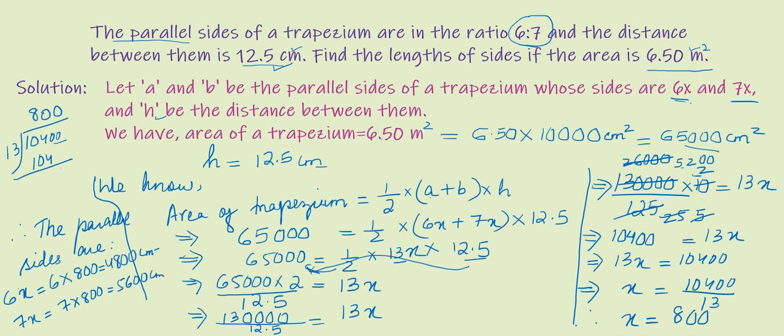Converting to meters: 4800 centimeter equals 48 meters, and 5600 centimeter equals 56 meters. These are the lengths of the parallel sides of the trapezium.